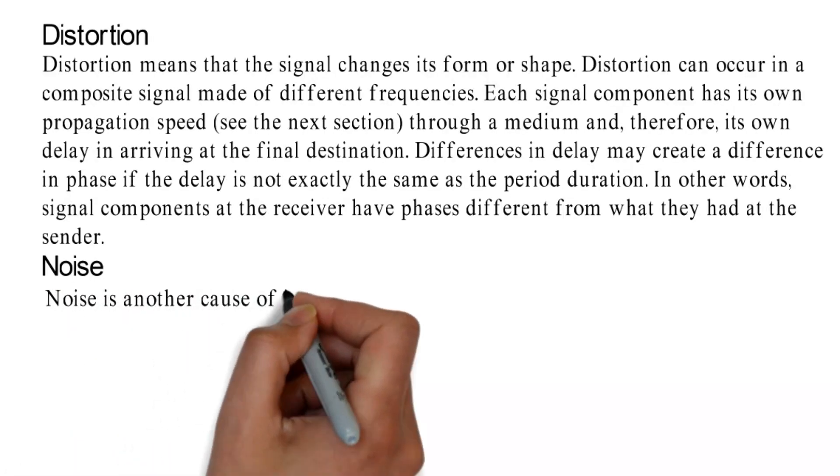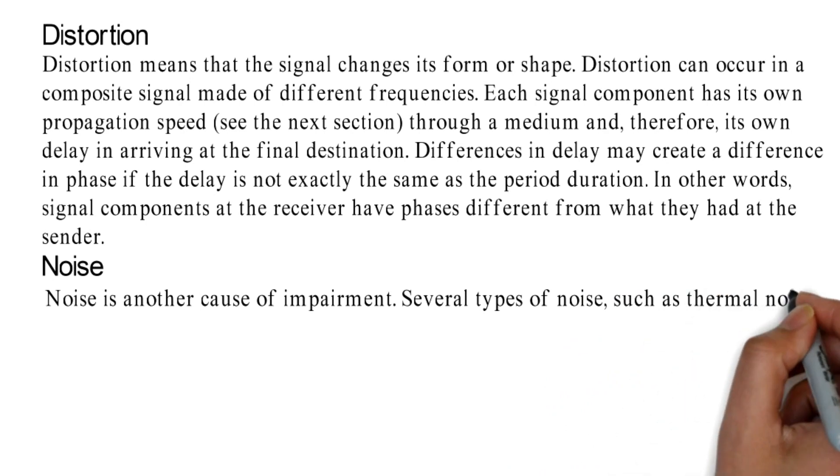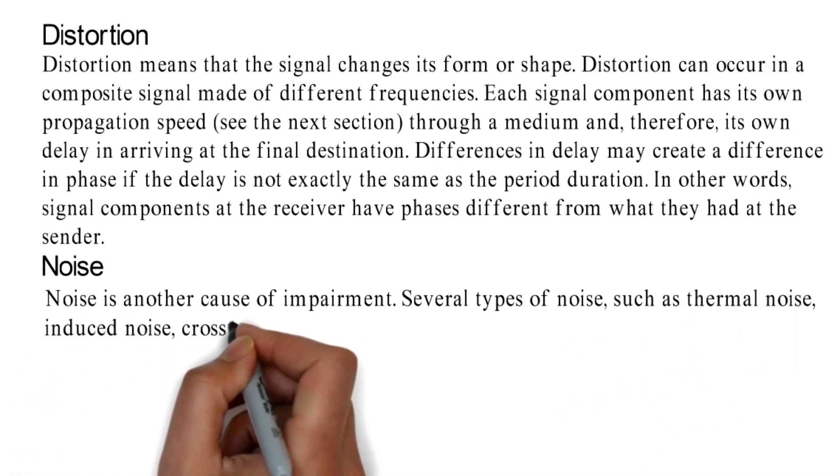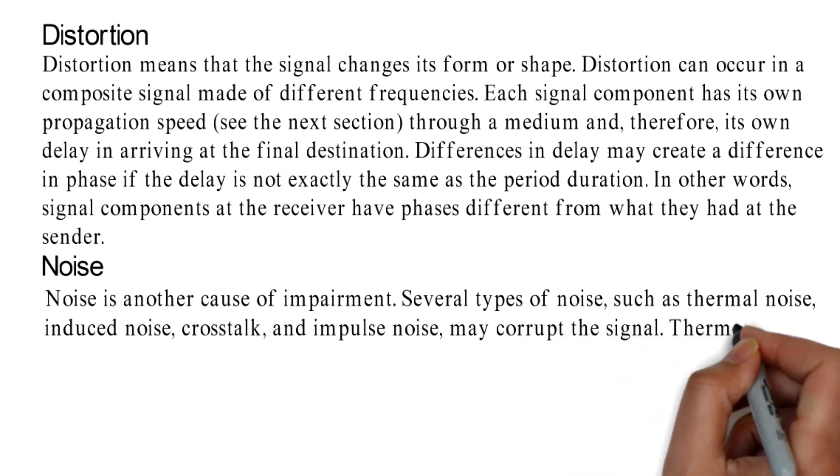Noise. Noise is another cause of impairment. Several types of noise, such as thermal noise, induced noise, crosstalk, and impulse noise, may corrupt the signal.